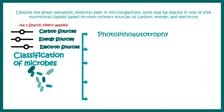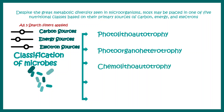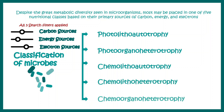Spoiler alert: these names are pretty difficult to pronounce. The five classes are: photo-litho-autotrophy, photo-organo-heterotrophy, chemo-litho-autotrophy, chemo-litho-heterotrophy, and chemo-organo-heterotrophy. All these names look super complex, but if we know how to read them, a lot of information can be retrieved.